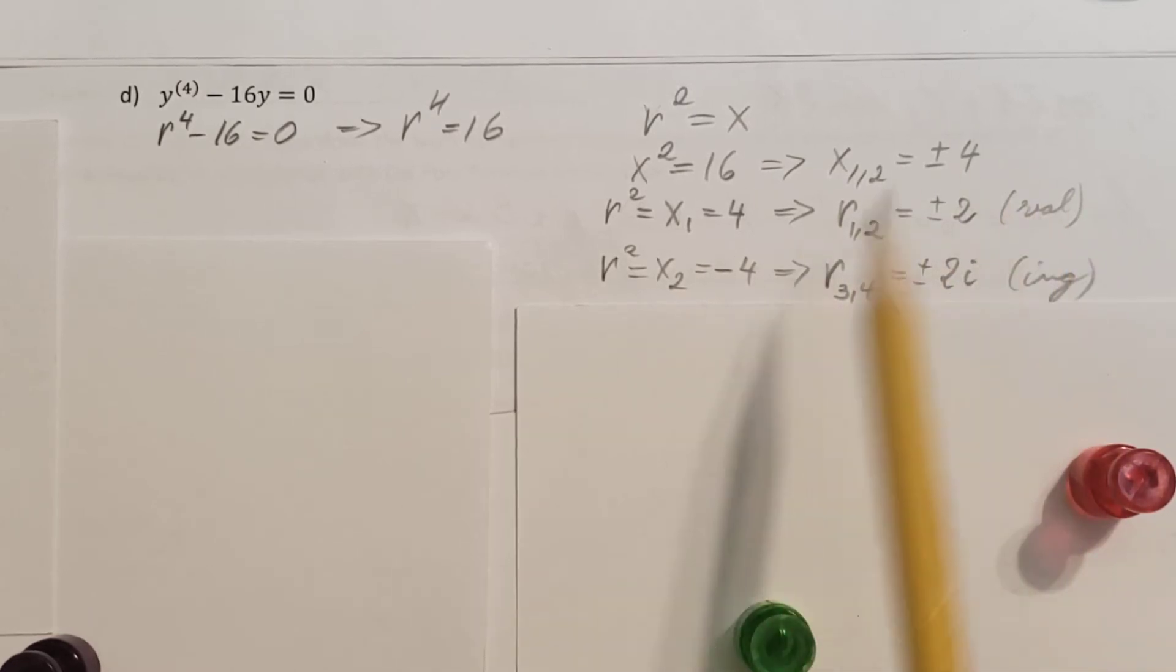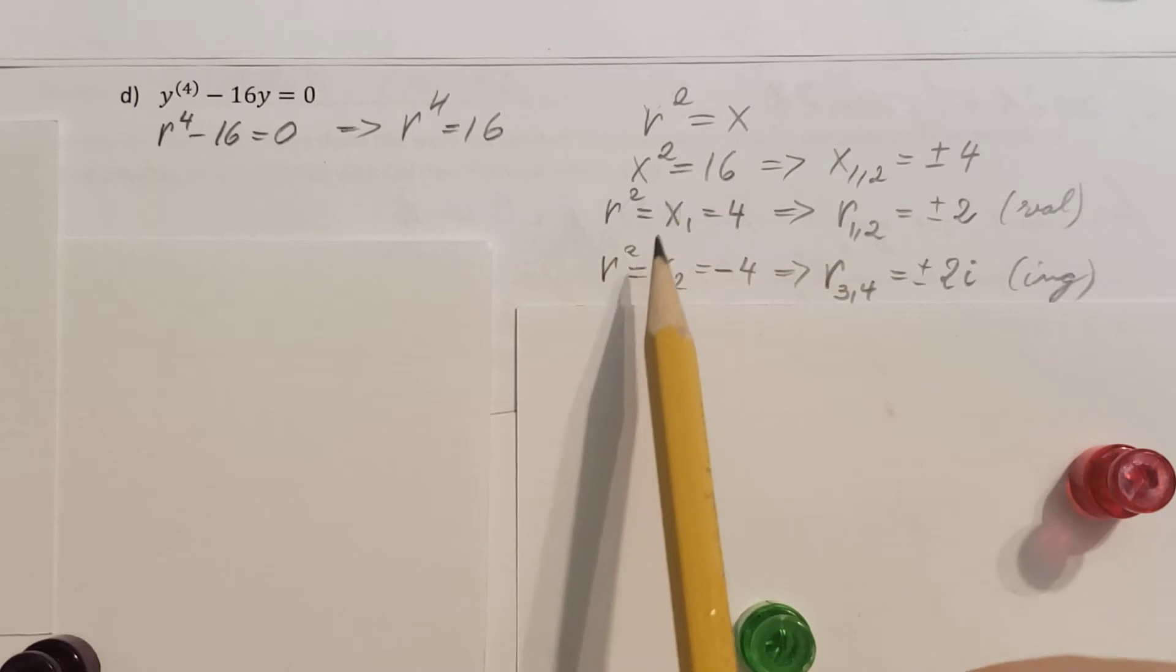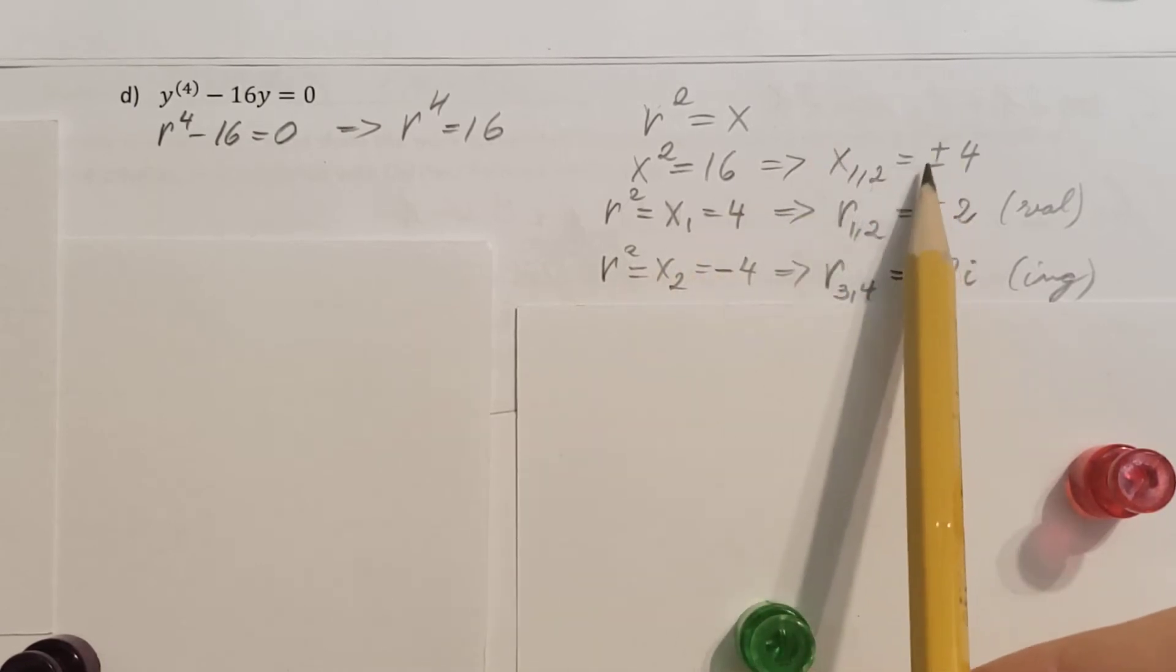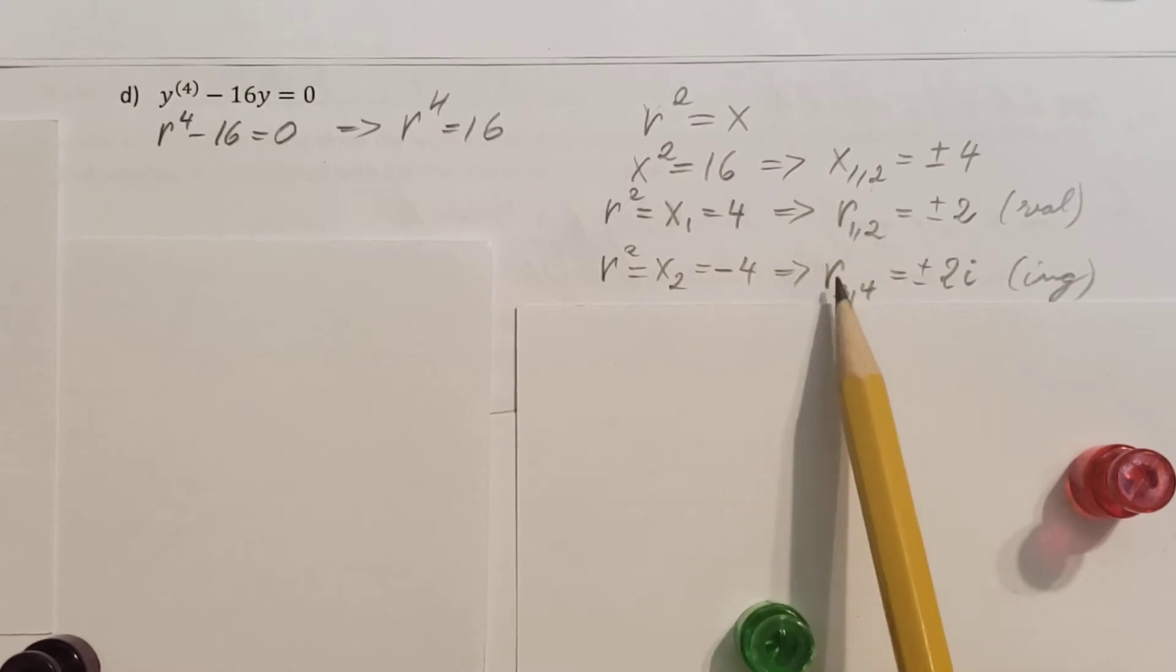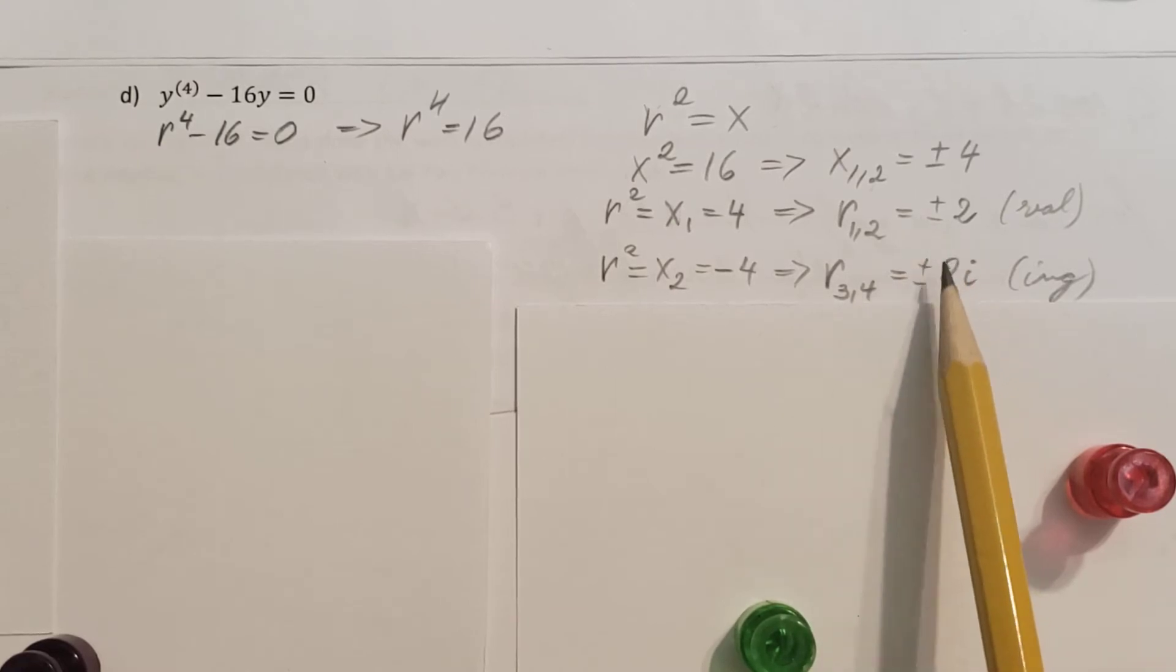And r2 equals x2, which will be negative 4, right here. So that's gonna be my r3 and 4. And that's gonna give me plus minus 2i, imaginary number.